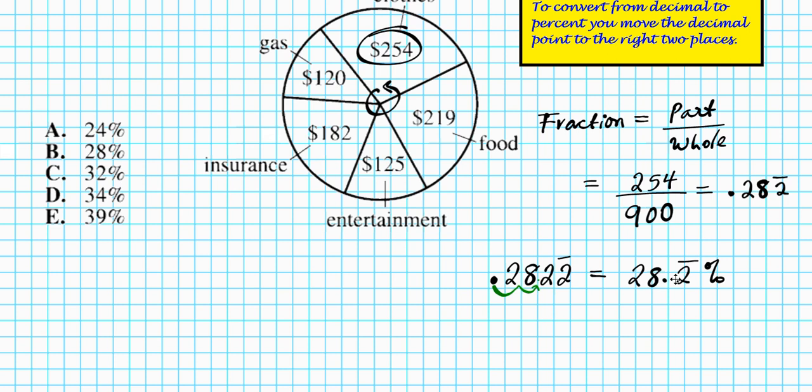So this becomes 28.2 repeating percent. If we want to round this to the nearest percent, this number is less than five. So we round down, truncate this component off. We're left with 28% as a percentage that represents the fraction of the greatest expenditure to the total. Answer is option letter B.